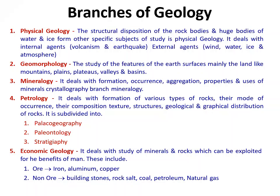The second branch is geomorphology. This word can be split into geo plus morphology. Geo means rocks, soil or earth. Morphosis is the constant change occurring with regard to rocks, soil or earth, and logy is the science related to those factors. Geomorphology is defined as the study of the features of the earth's surface — mainly the land — like mountains, plains, plateaus, valleys and basins.